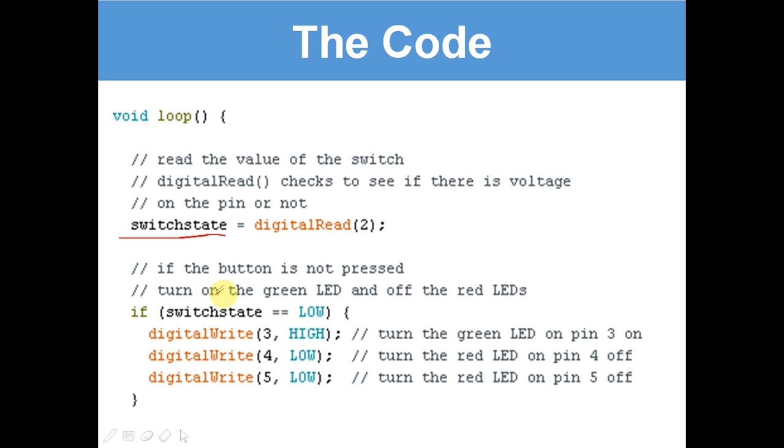If the button is not pressed, turn on the green LED and off the red LEDs. If switchState equals LOW, which means the button is not pressed - digitalWrite 3 HIGH, digitalWrite 4 LOW, digitalWrite 5 LOW. digitalWrite can set outputs as HIGH or LOW. HIGH meaning you can send electricity out of that, and LOW meaning you don't. So here digitalWrite 3 HIGH - there is five volts now being sent through digital pin 3 to the LED. The green LED will now light up.